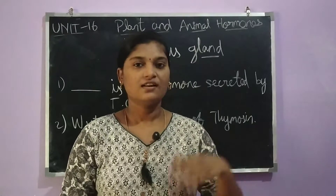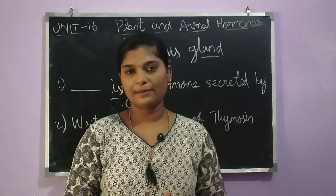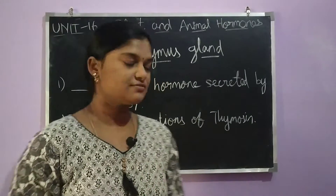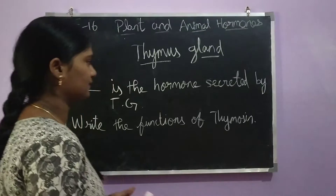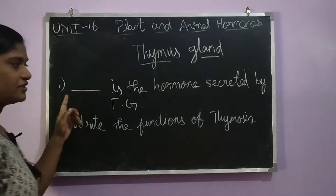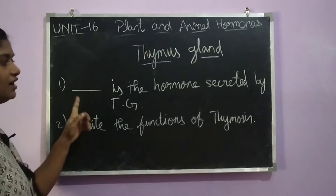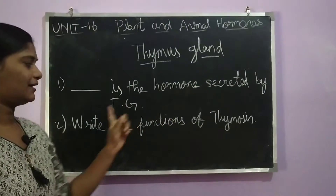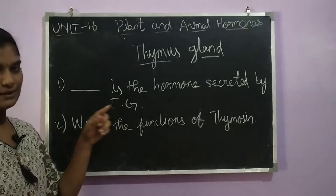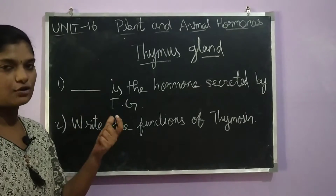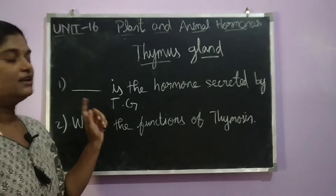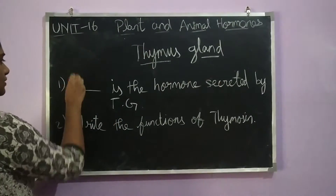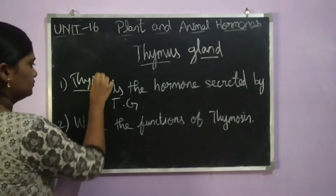Hello students. Last class we discussed the thymus gland. So let's look at the questions and answers from that class. The first question: dash is the hormone secreted by the thymus gland. The hormone released from the thymus gland is thymosin. So the answer to question one is thymosin.